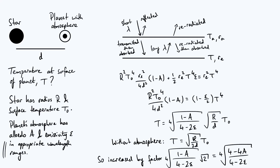For a perfect greenhouse atmosphere — albedo zero, emissivity one — the enhancement factor is the fourth root of two. Increasing the albedo decreases the numerator and reduces the enhancement, which makes sense since more incoming power is reflected. Decreasing epsilon reduces the denominator subtracted, making it larger and shrinking the enhancement factor, consistent with the expectation that a less efficient re-radiating atmosphere produces a smaller temperature boost. That's enough for this video — thank you for watching and see you next time.